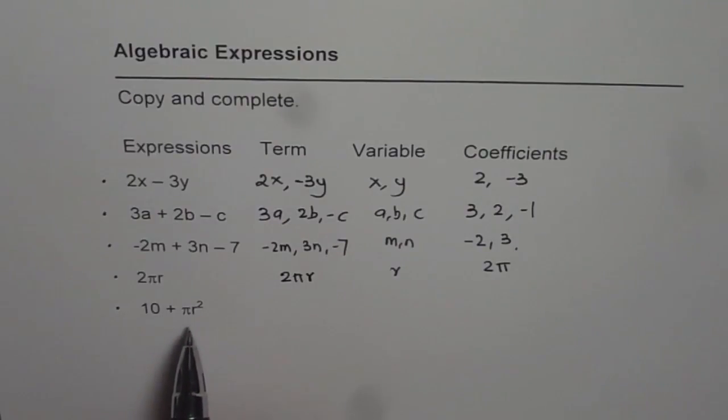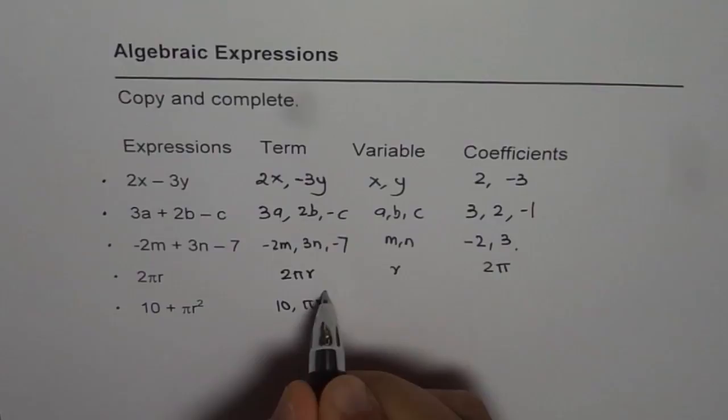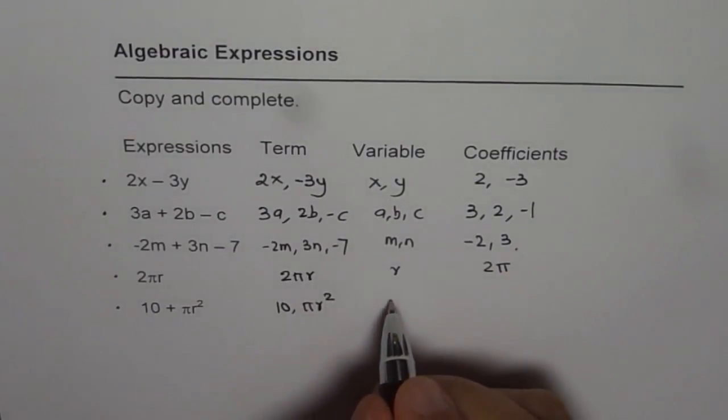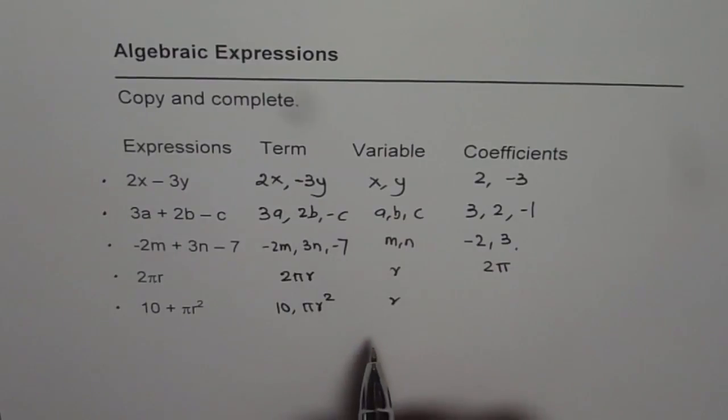Now 10 plus pi r squared has two terms. The terms are 10 and pi r squared. Variables are, there is only one variable here, r, and the coefficient will be pi. The coefficient for r squared, that is the coefficient in this case.